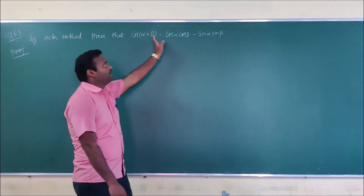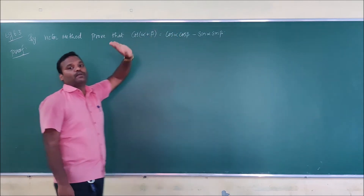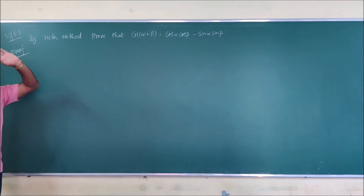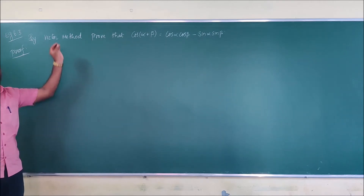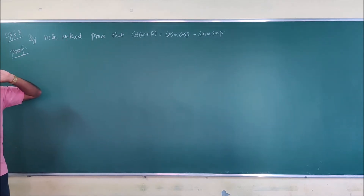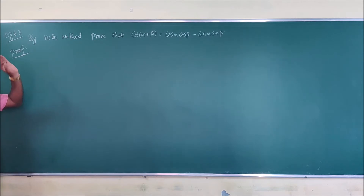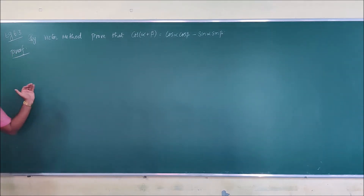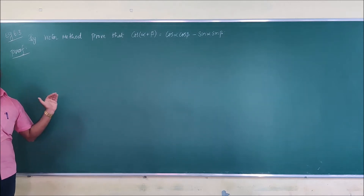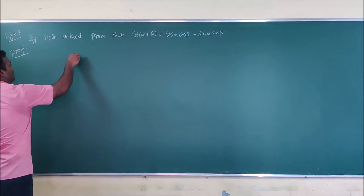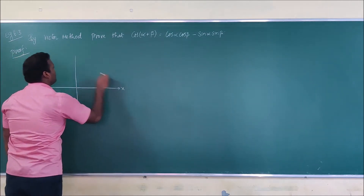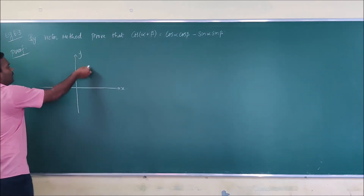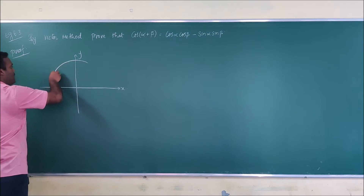Since it involves trigonometric functions, we know that all trigonometric functions are bounded between the values minus 1 and plus 1. So if you want to prove any result in trigonometric functions, we can take the unit circle for our proof. So here also we are going to take the unit circle.